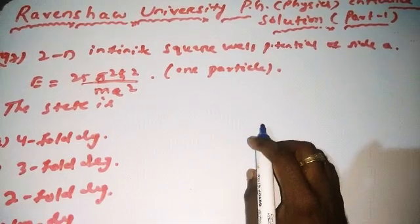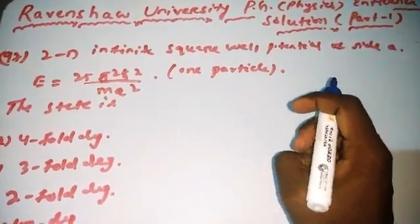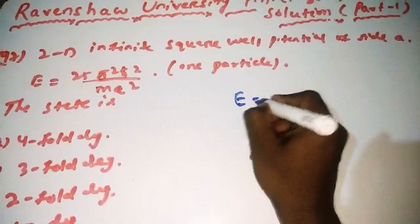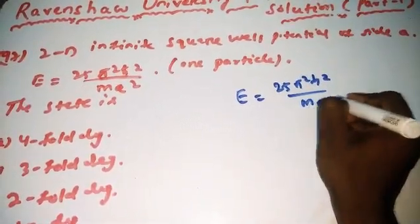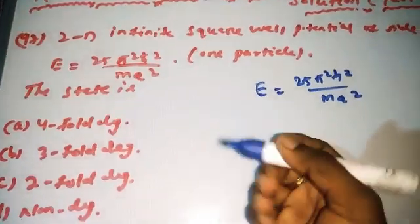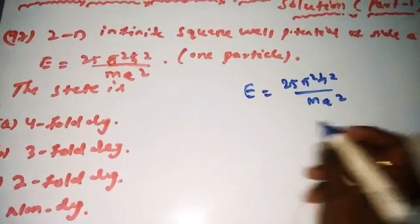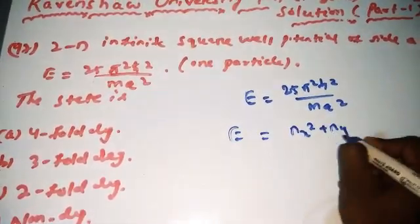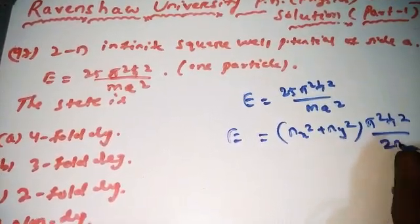Second question in quantum mechanics: a particle confined in an infinite square potential in two dimensions, side A. The energy given is 25π²ℏ²/2mA². Using the 2D energy formula: E = (nx² + ny²) × π²ℏ²/2mA².